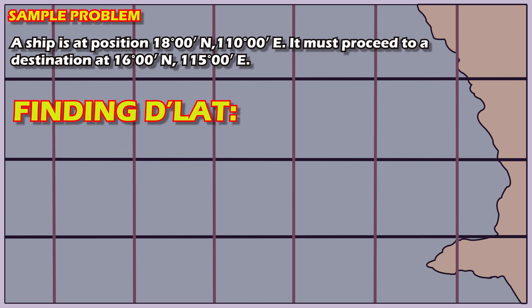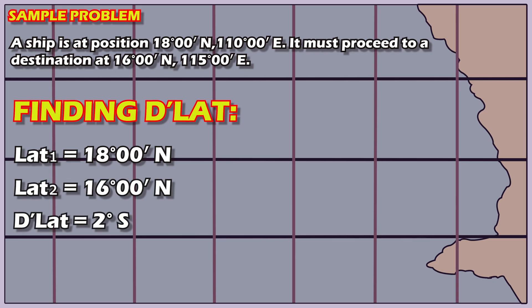Finding the difference of latitude. The ship starts at latitude 18 degrees north, and the destination is at latitude 16 degrees north. The difference of latitude is 2 degrees south. Now, let's convert that into nautical miles. 2 degrees multiplied by 60 minutes equals 120 nautical miles.